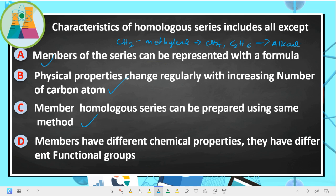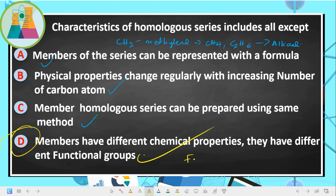The statement 'members have different chemical properties' is false. Members of the same homologous series have the same chemical properties — that makes this the exception we're looking for. They also have the same functional group, so saying they have different chemical properties or different functional groups makes that answer wrong.